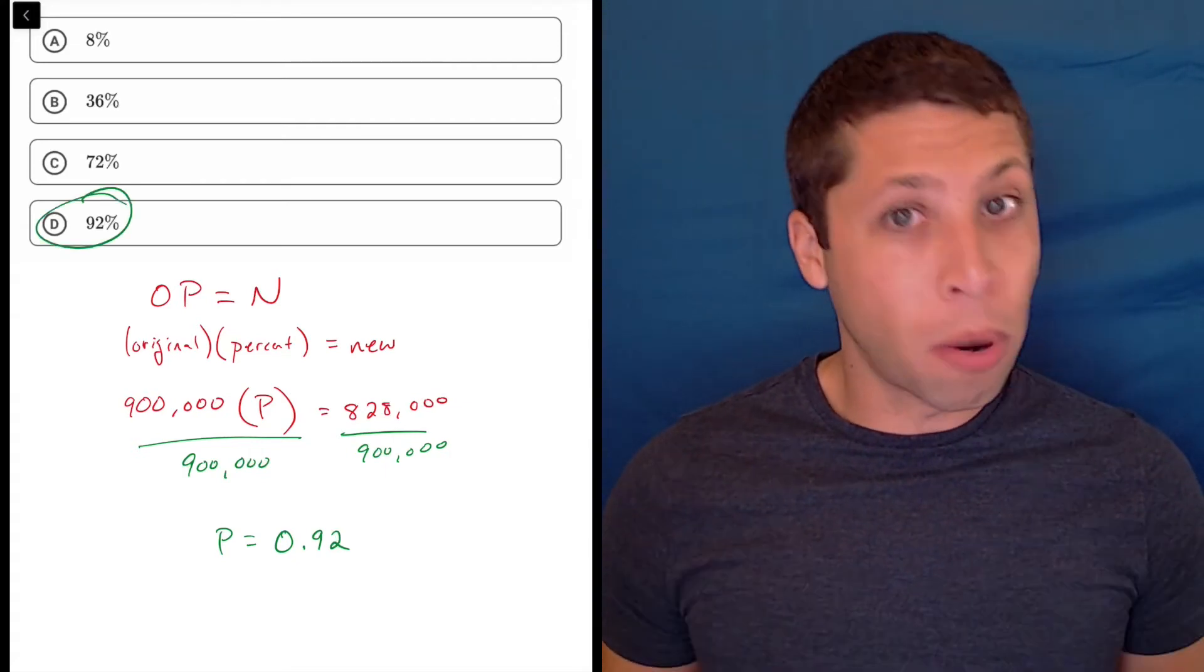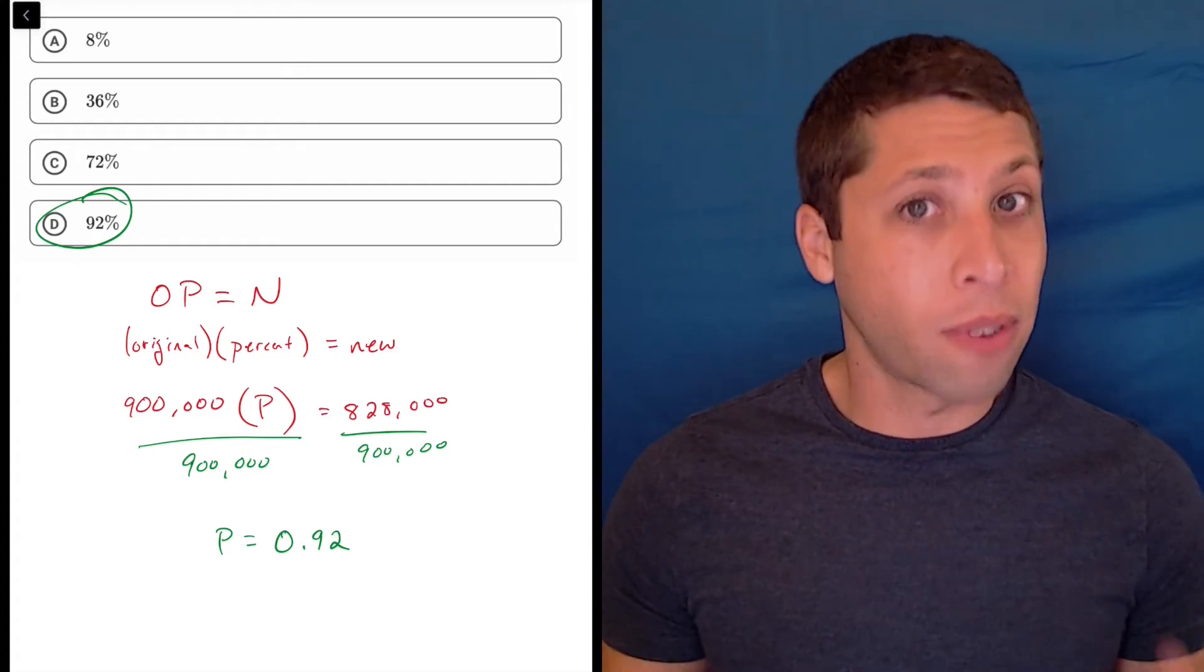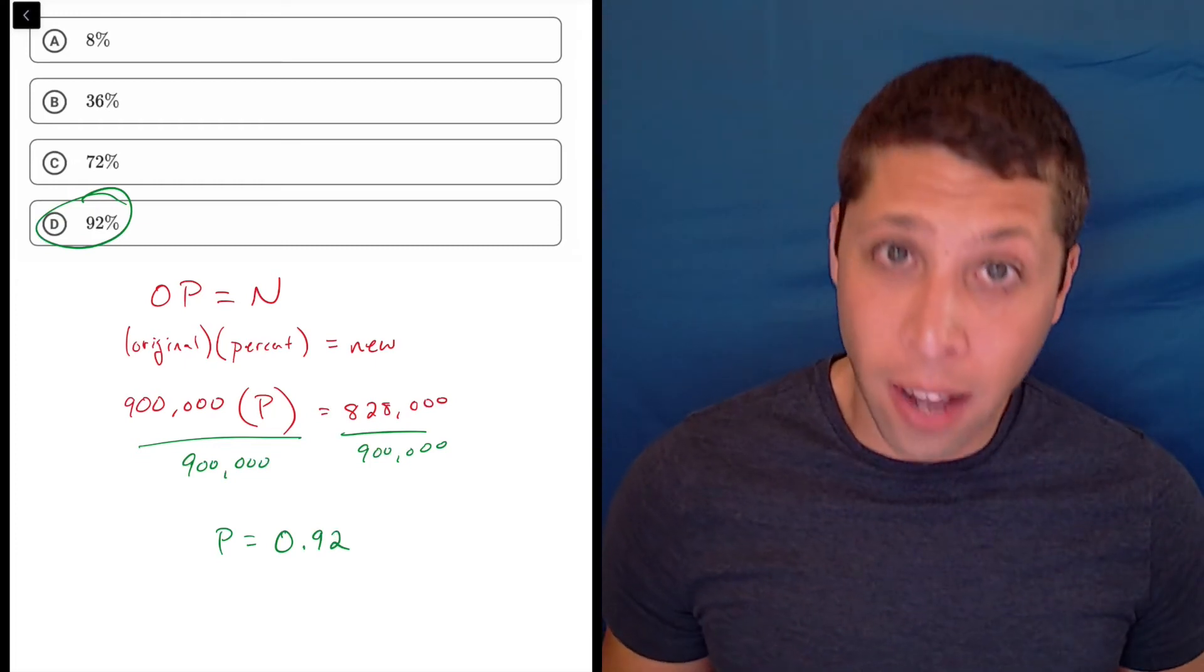Now look, again, you probably could have gotten this right straight away just by thinking about percentages as fractions and just starting with 828,000 over 900,000, and that is fine,